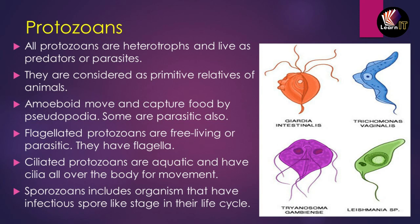Now let us talk about protozoans. All protozoans are heterotrophs and live as predators or parasites — they take food from other organisms or plants. They are considered very primitive relatives of animals. They have an amoeboid structure and move and capture food with the help of pseudopodia, which is a special feature of Amoeba. Some protozoans are parasitic, and many contain flagella which help them move in free-living or parasitic form.